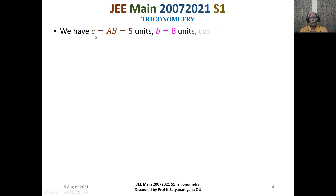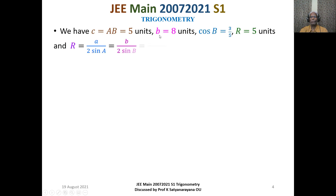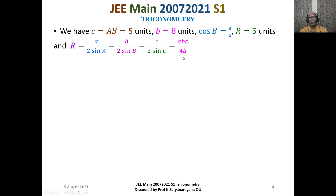We now have side c equal to 5 and side b equal to 8, which we just found. We also have cos B equal to 3 by 5 and capital R equal to 5 units, along with the famous sine rule formula.